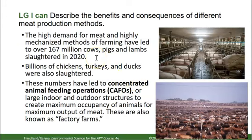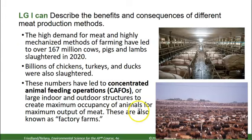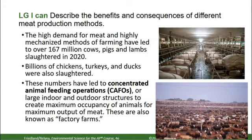Let's talk about CAFOs — concentrated animal feed operations. You can see this with pigs and with cattle. We slaughtered 167 million cows, pigs, and lambs in 2020. Remember, there are 330 to 340 million people in the U.S., so if people are eating a lot of meat, this is how much you have to slaughter. CAFOs are also known as factory farms, and they're really designed to maximize productivity and efficiency.